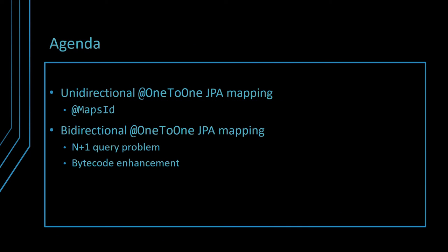First, we will discuss the unidirectional one-to-one JPA mapping and why you should be using the mapsId notation as well. Second, we will talk about the bidirectional one-to-one JPA mapping and see why it can lead to the N+1 query problem. In the end, we will see how to use bytecode enhancement to work around the N+1 query problem affecting the parent side of a bidirectional one-to-one association.